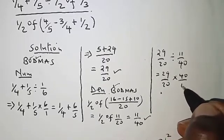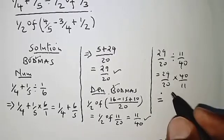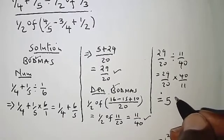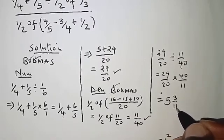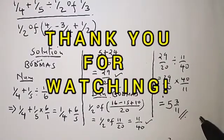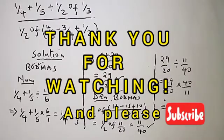When we work this out, we should get 5 and 3 over 11. So that's it for this question. Thanks for watching and see you next time.